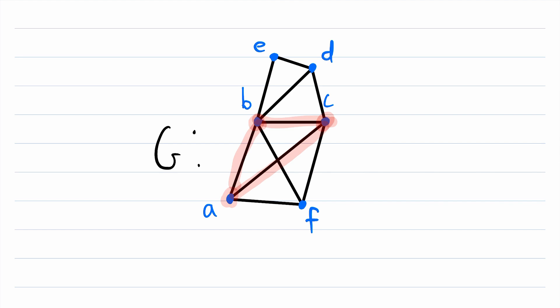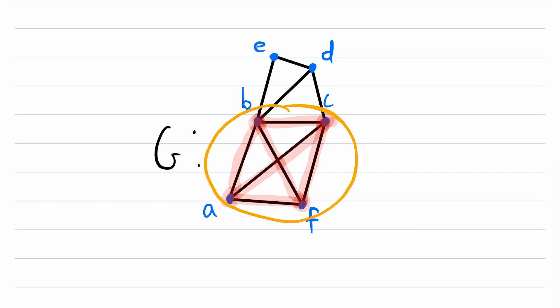Now, what is a maximal clique? A maximal clique is a clique that cannot be extended by adding in another vertex of the graph. Let's look at this as a non-example of a maximal clique. Like we said, this is a clique, but it's not a maximal clique because we could extend it by adding in another vertex of the graph. We can add in F and now have a clique with more vertices, because F is adjacent to all the vertices in our original clique. Now we are looking at a maximal clique.